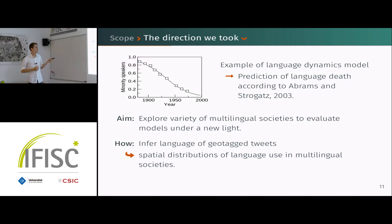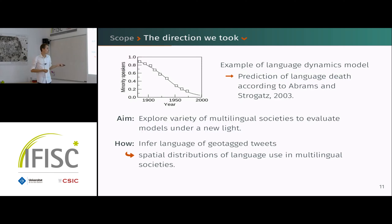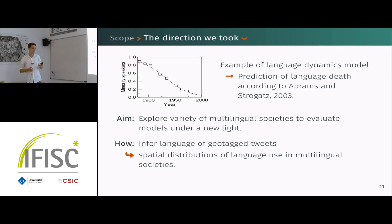We first need an observation to quantify this diversity. We infer the language of our geotagged tweets, match users to cells, and get a spatial distribution of language use in a number of societies — more than 15, though I'll just show you a couple of examples.